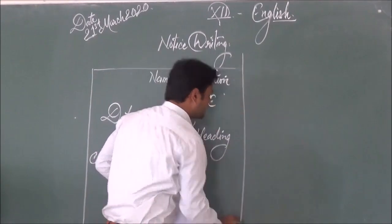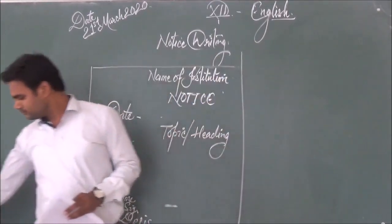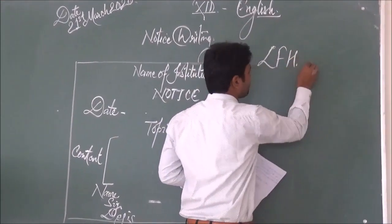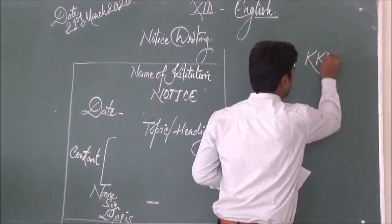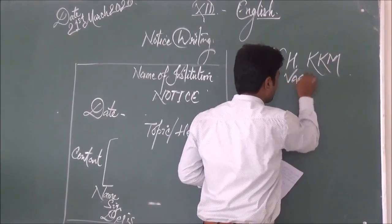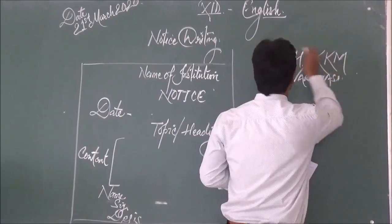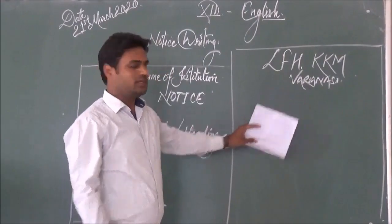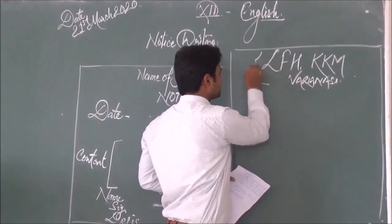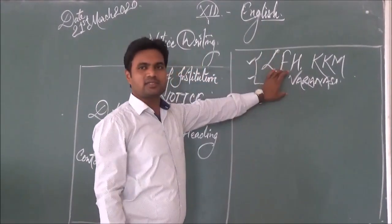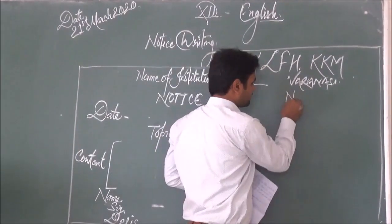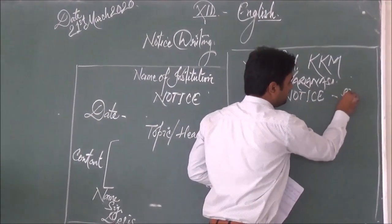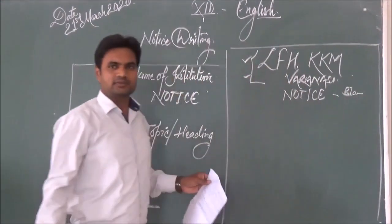First of all, we write the name of the institution. It should be a maximum of two lines — the first line for the location and the second line for the city or district. Second, write 'Notice' in block capital letters, and then we follow the format.